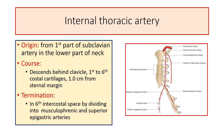It then descends vertically behind the second to sixth costal cartilages, lying about one centimeter from the margin of the sternum, and at the level of the sixth intercostal space it terminates by dividing into the musculophrenic and superior epigastric arteries. In this picture you can see the artery coming from the subclavian artery, passing behind the first costal cartilage and clavicle, then behind the second to sixth costal cartilages, terminating in the sixth intercostal space with its two divisions.